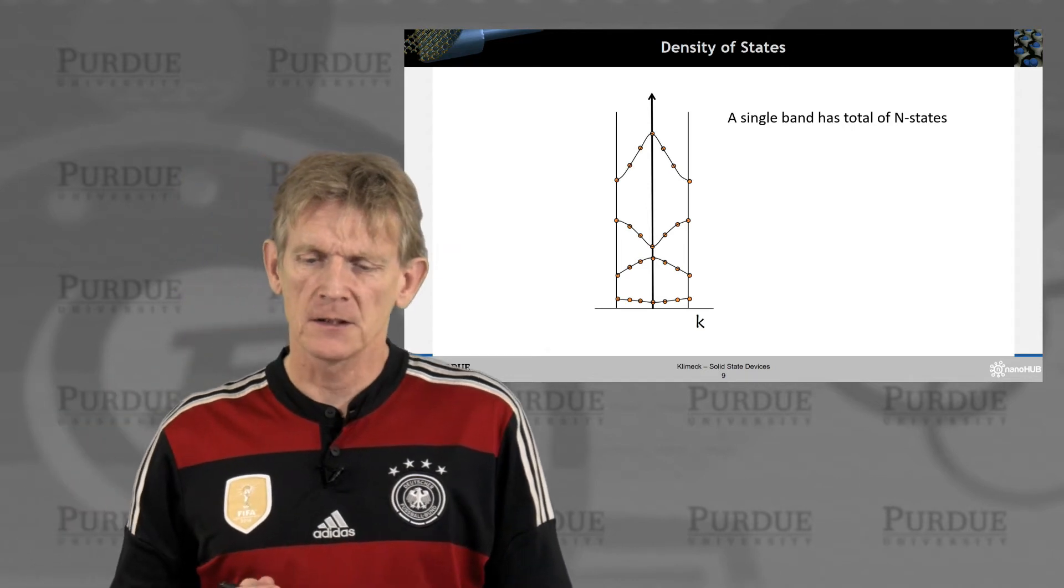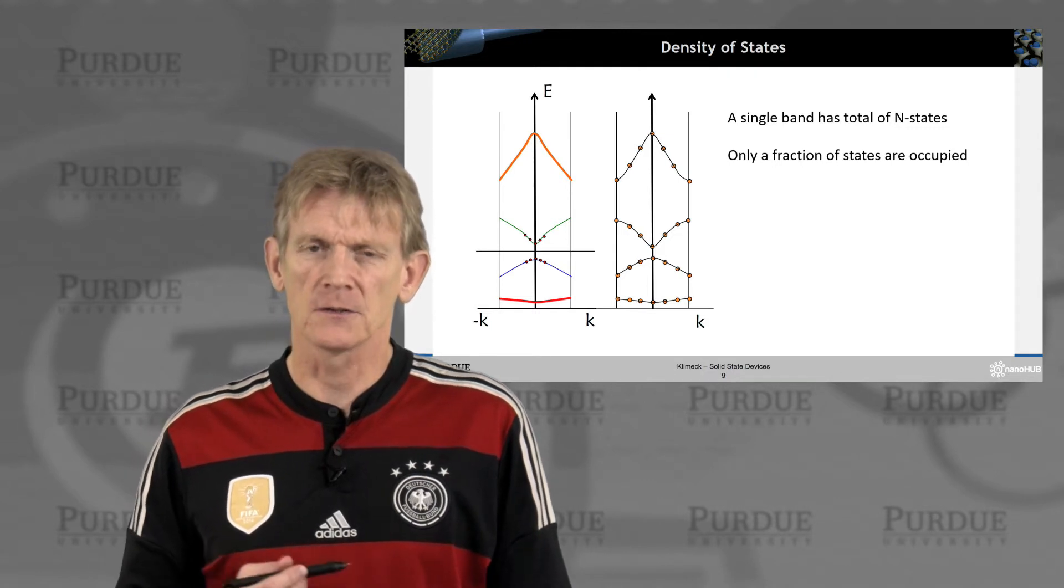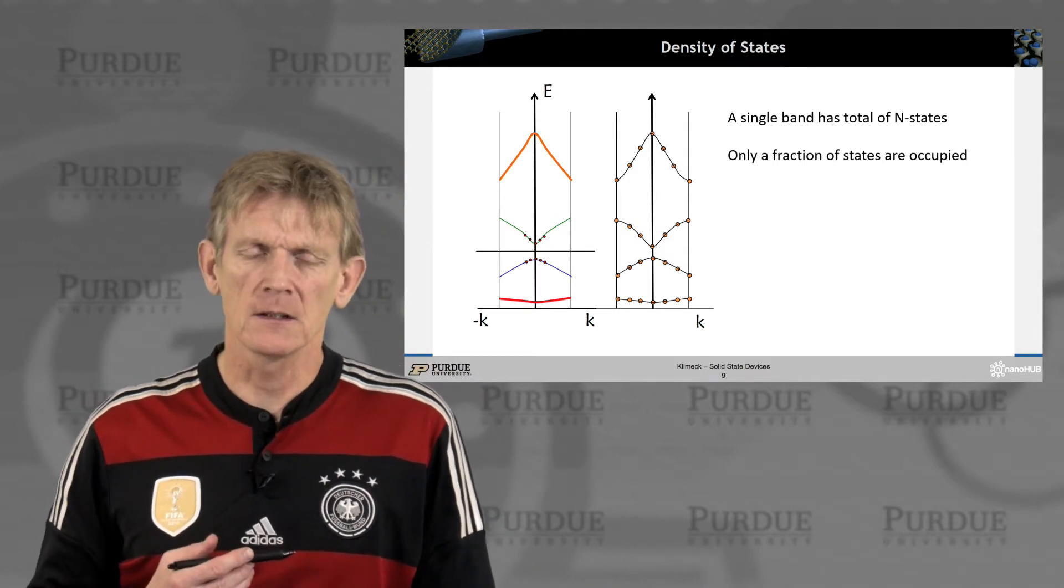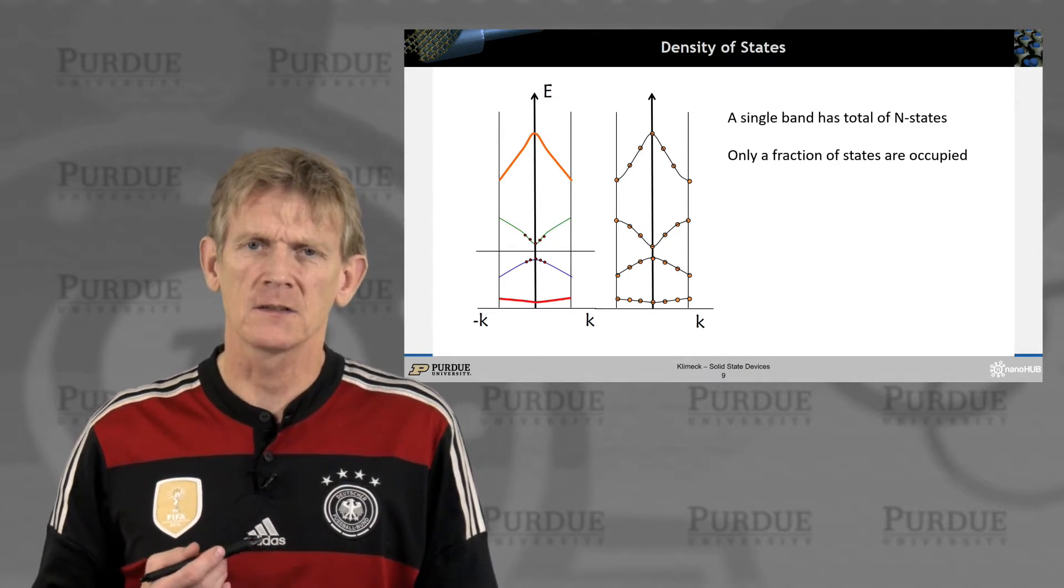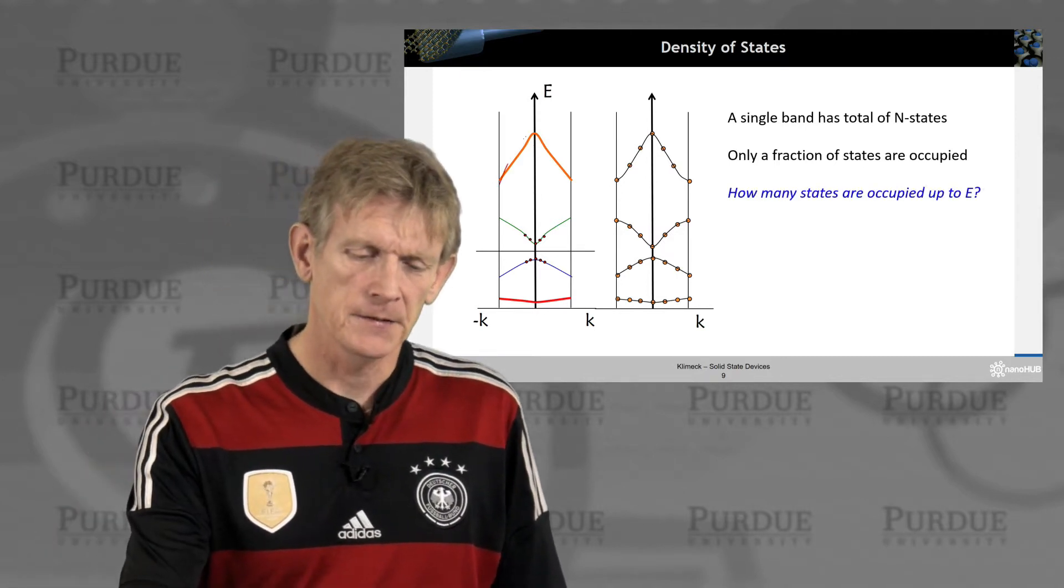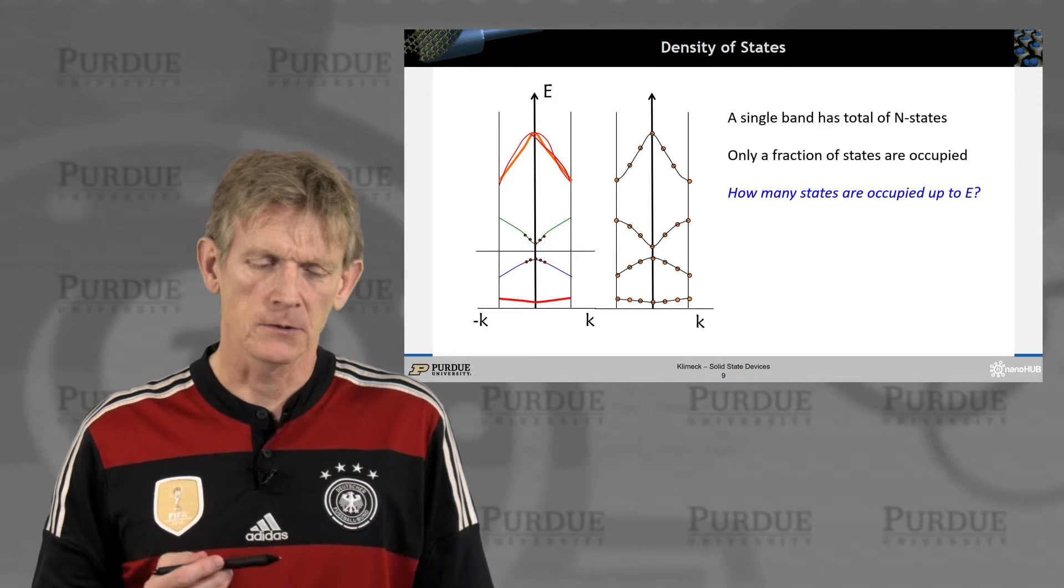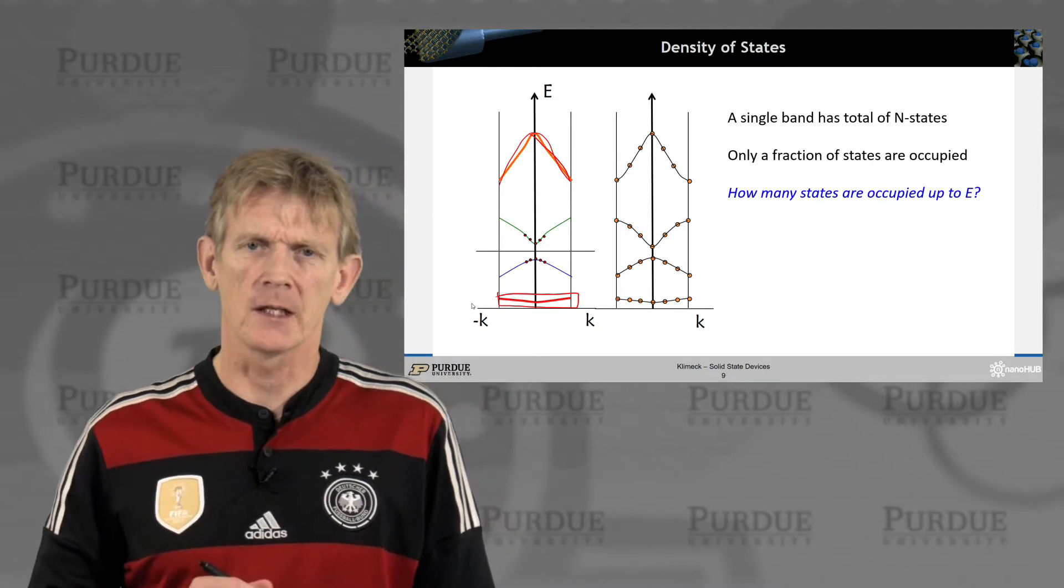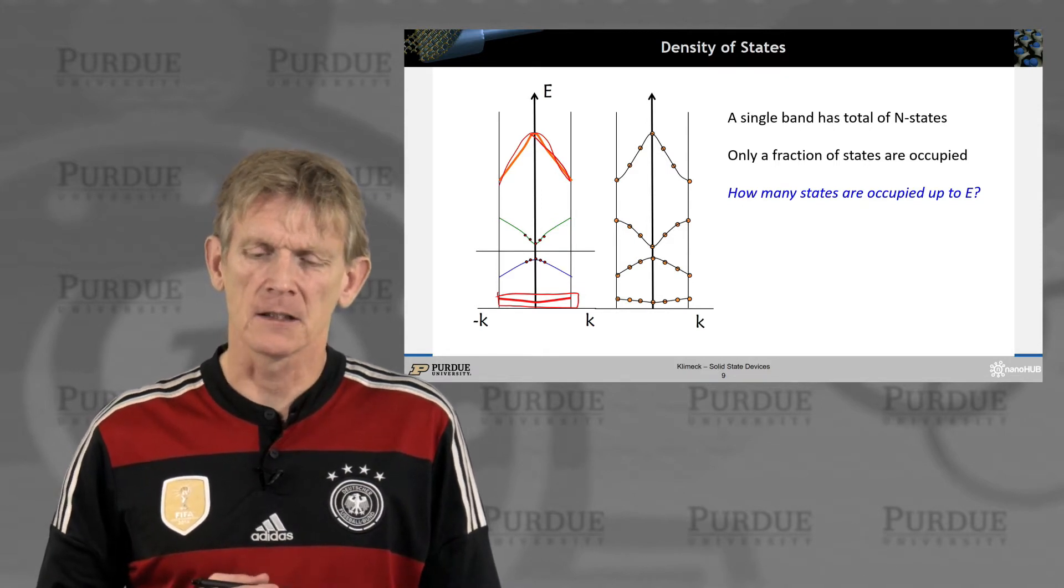All right, so density of states. We know that per band we have a certain number of states, depending on the discretization. So we have n states per band. But those are just the bands where electrons can be. Only a fraction of these bands and these states are really occupied. For example, up here, the upper bands here, there's typically no electrons in there. And full bands are also not all that important because there's no electron flow in them.